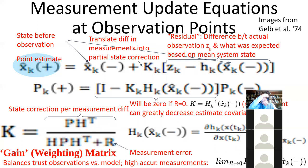When you do the state update, if you start with a legitimate state estimate that sums to the total population, and adjust it by the gain matrix times the residual, you will get something that is itself a legitimate state update — S plus I plus R still equals the total population. This is guaranteed by the matrix algebra, and it will be very obvious why it's guaranteed for particle filtering and particle MCMC — you won't have to squint at the matrix algebra.